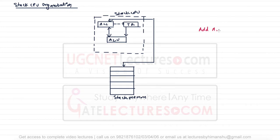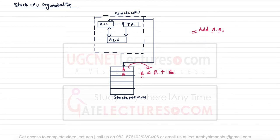Whenever you perform an operation, the data will always be present in the stack memory. For example, if you want to perform an operation like add(a, b), then a and b may be some values stored inside the memory. When performing the add operation, b will be popped out first, then a will be popped out, the operation is performed between them, and the result is stored back — but we do not pass two addresses here.